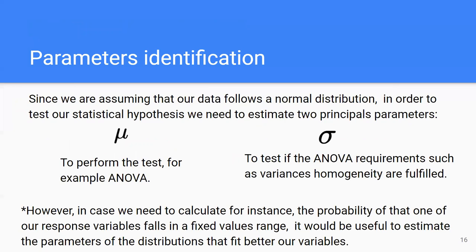For parameter identification, since we are assuming that our data follows a normal distribution, in order to test our statistical hypotheses, we need to estimate two principal parameters: the means to perform tests such as ANOVA, and the variance to fulfill ANOVA requirements such as variance homogeneity. However, in case the data does not follow a normal distribution, a non-parametric test could be performed, such as the Wilcoxon or Mann-Whitney U test.